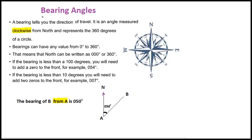Today's lesson is Bearing Angles. A bearing tells you the direction of travel. It's an angle measured clockwise from north and represents the 360 degrees of a circle — pretty much like a compass.